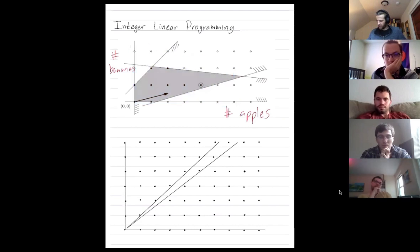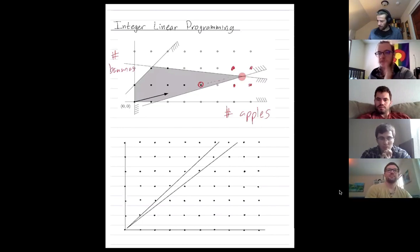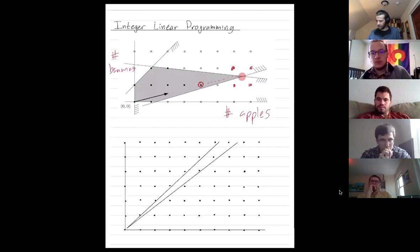That does not always work. Naive rounding does not always work. So I'm back to the black, white, and gray picture again. Here's our optimum. If I round, I would round to one of these integer points. None of those integer points are feasible, right? So rounding doesn't even give me a feasible solution. I take the optimal solution, I round it, I don't even get a feasible one. The best feasible solution for integer solutions is pretty far away from the optimal non-integer solution. You can make this as bad as you want.